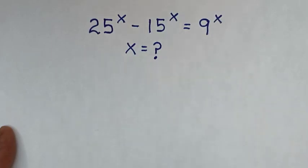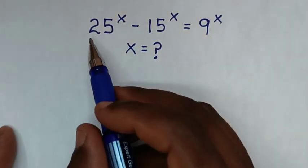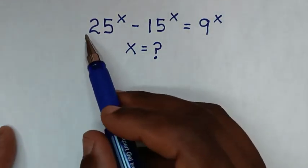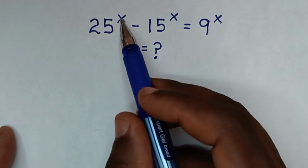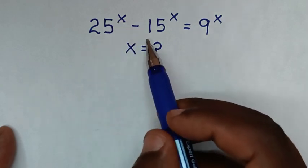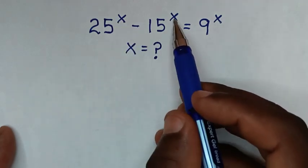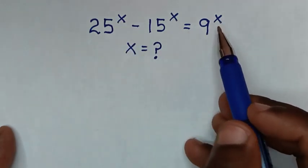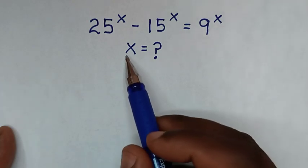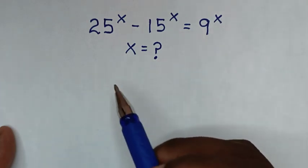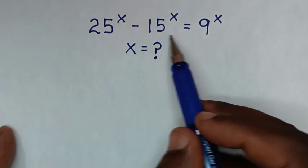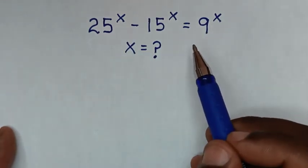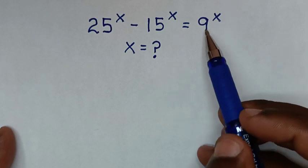Welcome. We'll solve the math problem: 25^x minus 15^x is equal to 9^x. We need to find the value of x from this equation.